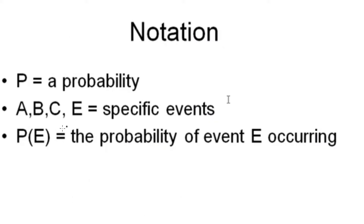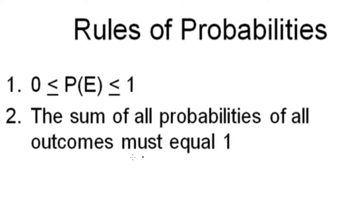Notation: P represents a probability, A, B, C, E are specific events, and P(E) is the probability of event E occurring. Rules of probabilities: the probability of an event must be between zero and one — we cannot have greater than one or less than zero. The sum of all probabilities of outcomes must be equal to one.